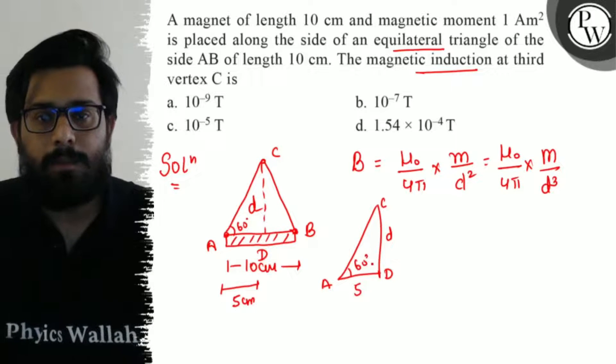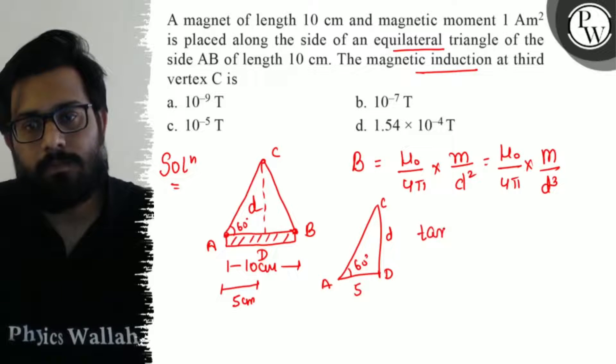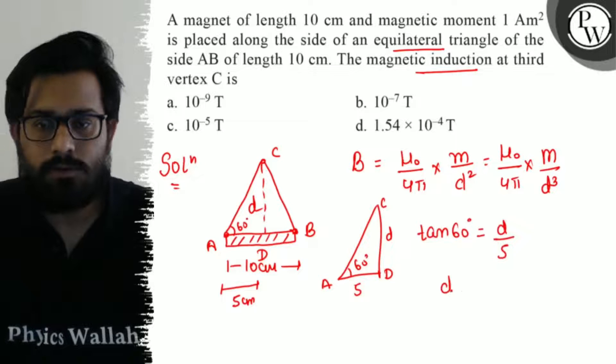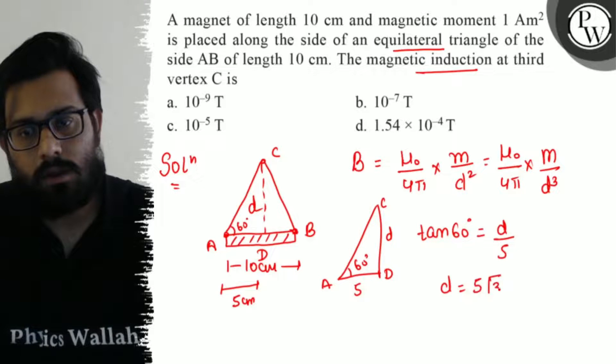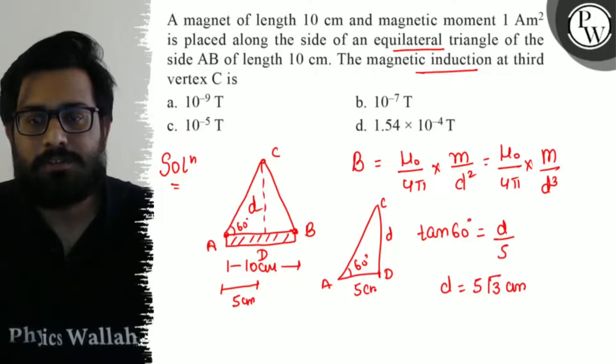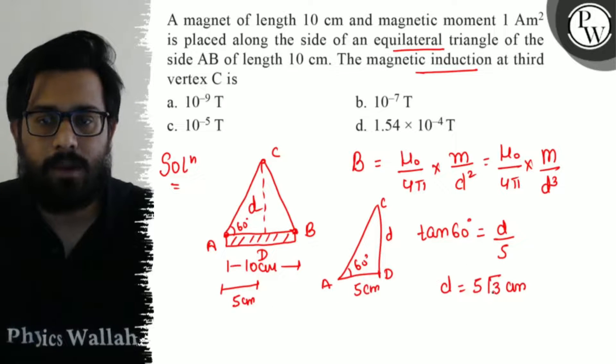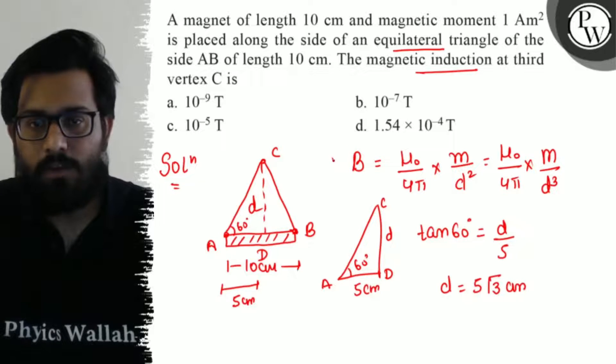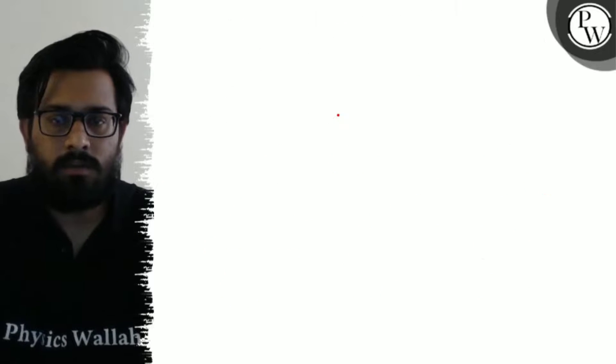So here I use: tan 60 degree is equals to perpendicular upon base. So D is equals to 5 into root 3, which is in centimeter, because it was 5 centimeters. So here the value of d comes out to be 5 root 3 centimeters. Now I have to find out the value of B. So let's solve this on the next page.